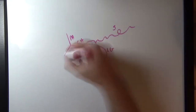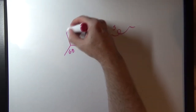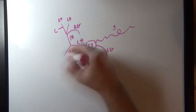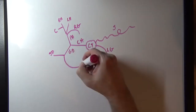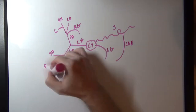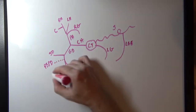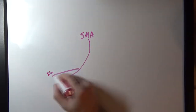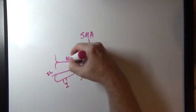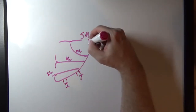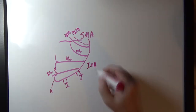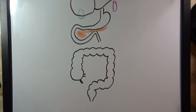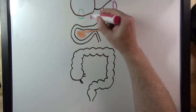Learning the arteries of the abdomen can seem daunting at first, but not to worry. I'm going to walk you through the three main trunks that branch off the abdominal aorta: the celiac trunk, the superior mesenteric artery, and the inferior mesenteric artery. I'll also draw their branching patterns and go over the organs these vessels supply, then tie it all together into one complete picture.